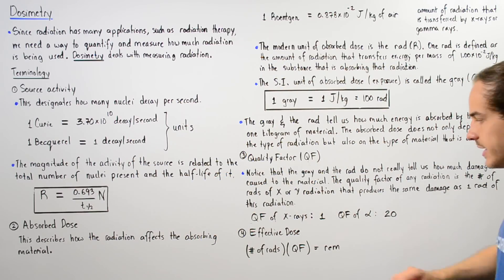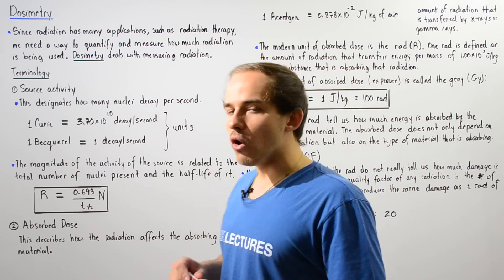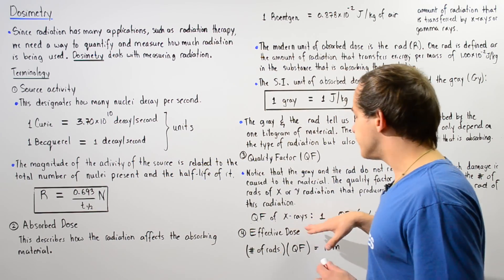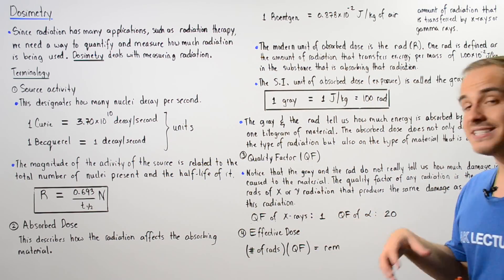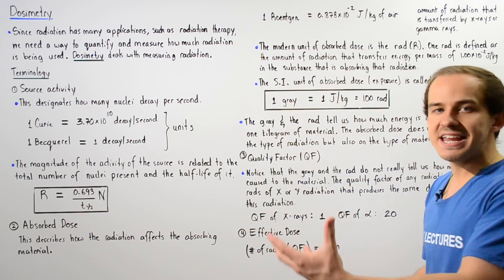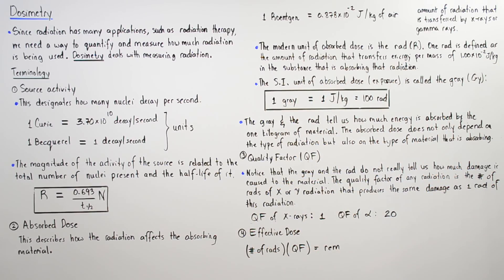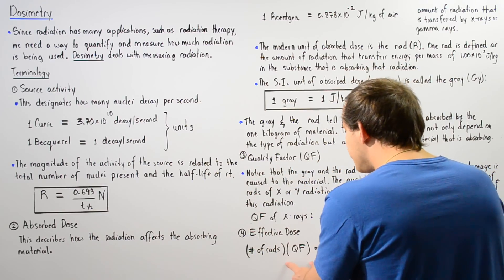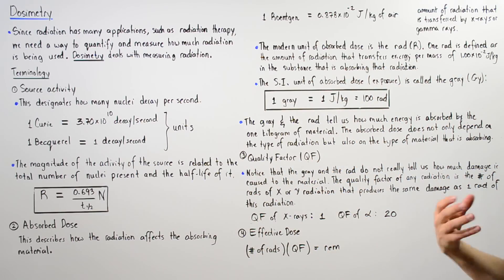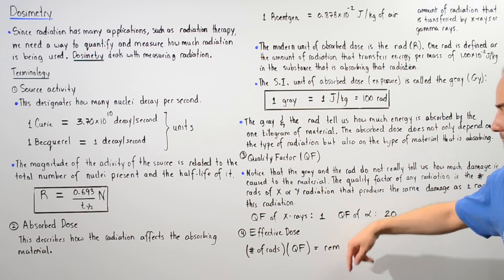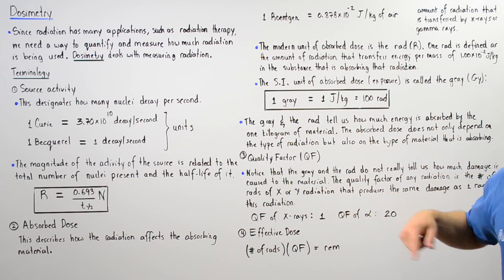Finally, the effective dose is simply the product of the number of rads of radiation being used and the quality factor (QF) of that radiation. The unit of effective dose is known as the REM — R-E-M.